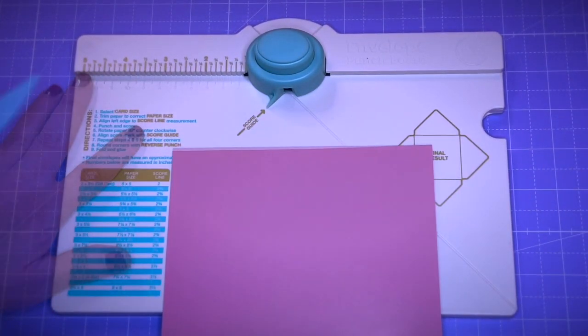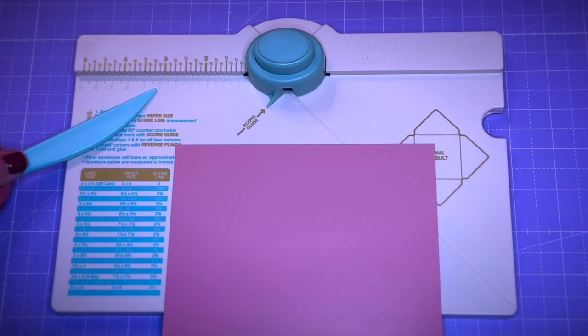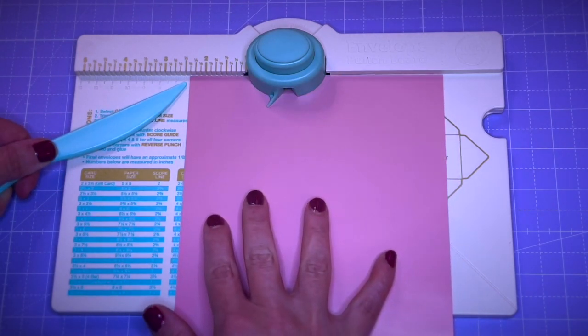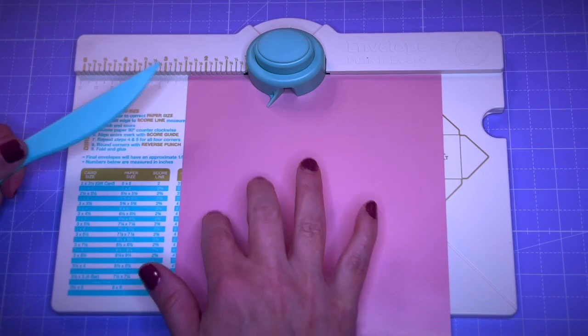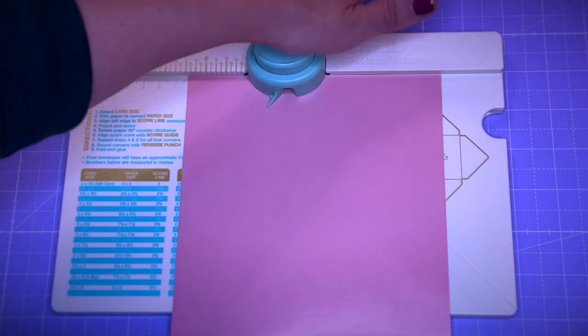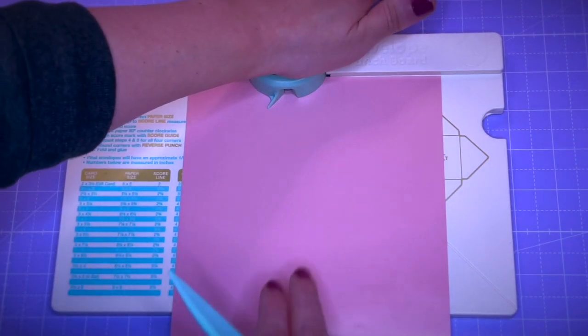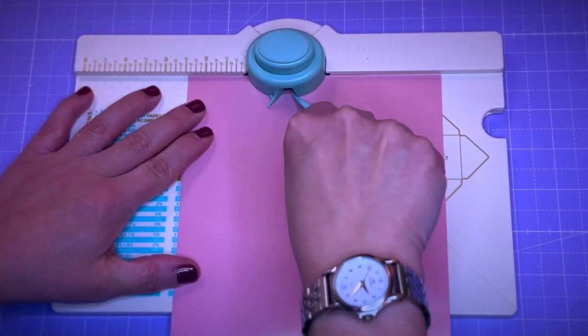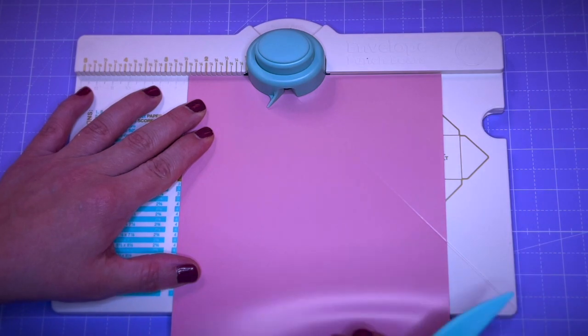Now we take our envelope punch board. I add my paper and position it all the way against the border, like so, and slide it over to exactly 6.2 centimeters. Then I'm going to add our first punch. My punch and then I score with my bone folder.